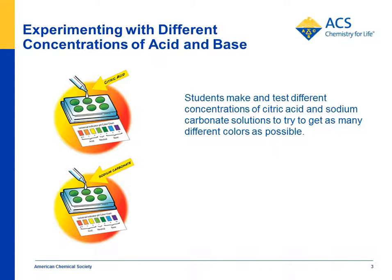What students do is make their own solutions out of citric acid and sodium carbonate, put them in universal indicator, and get a color change. They can also make a more concentrated citric acid or sodium carbonate solution for another color change, and then make it more concentrated again.